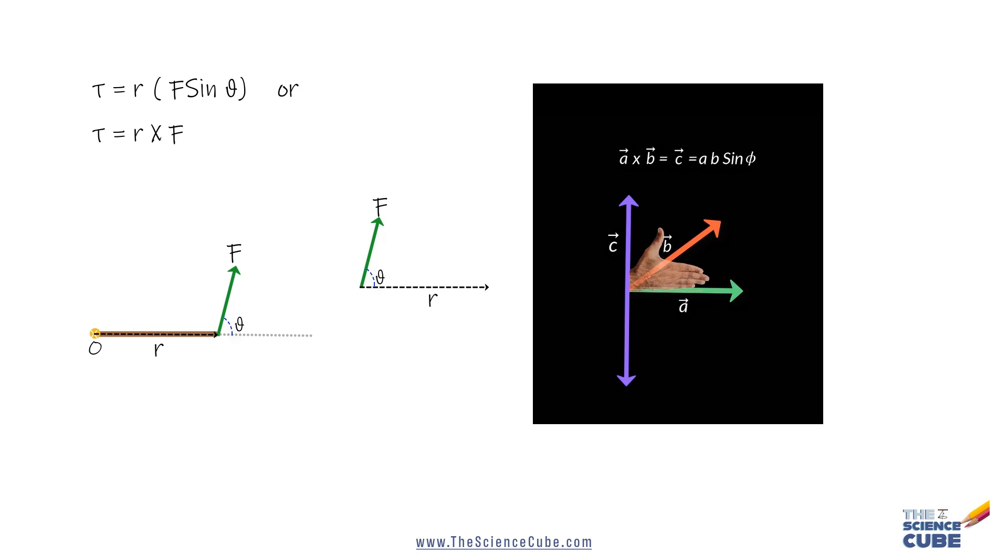Put your right hand along vector A, which is the first vector appearing in A cross B. That is, the base of the hand aligns with vector A and the palm faces vector B. Then you sweep your hand from vector A towards vector B like this. The direction of the thumb is the correct direction of the resultant vector C. That is how you find the direction of the torque vector as well.